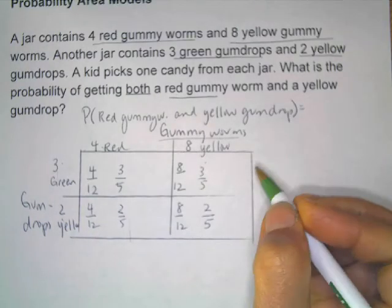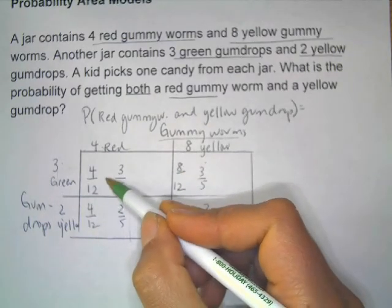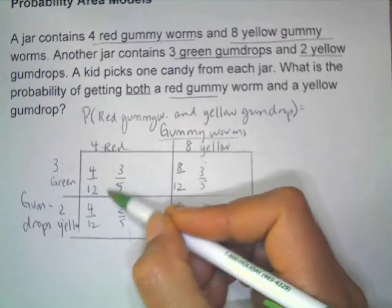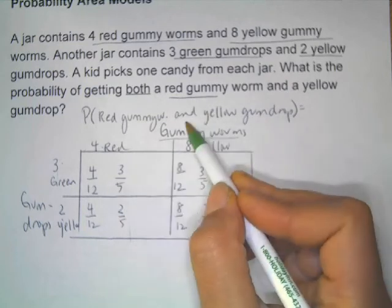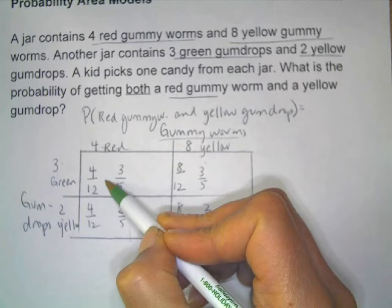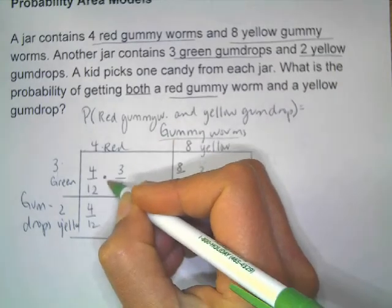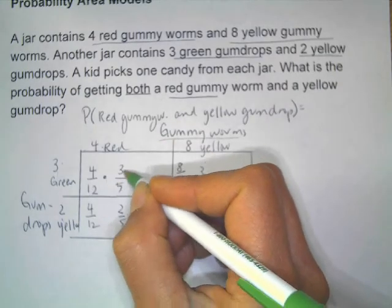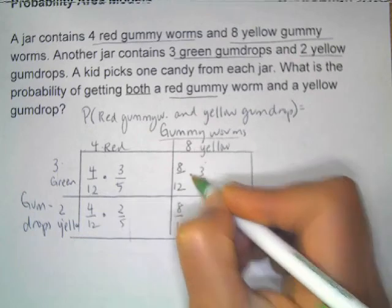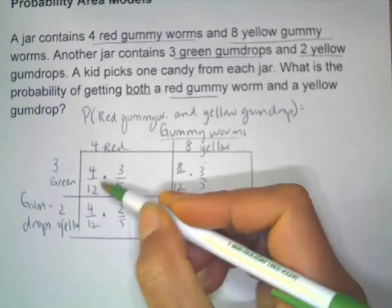This is our whole diagram. There's a four-twelfths probability. This is where it gets a little confusing — even though we're using the word 'and,' this is not a plus sign. We're taking four-twelfths of the three-fifths probability, so this is actually multiplication when you're looking at two events.